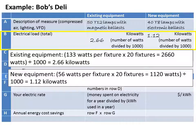Bob is replacing 20 fixtures. Therefore, to get the total electrical load for all 20 fixtures, Bob multiplies the 133 watts per fixture by the number of fixtures, which is 20. The result is 2660 watts, which he divides by 1000 to get 2.66 kilowatts. Bob made the same calculations for the new equipment and determined the electrical load for the new equipment is 1.12 kilowatts.